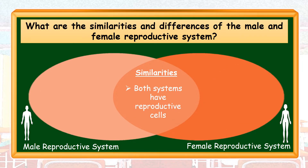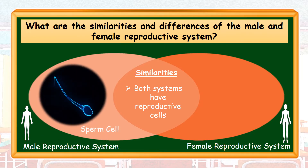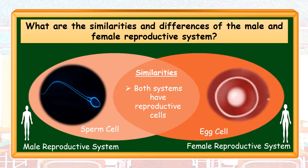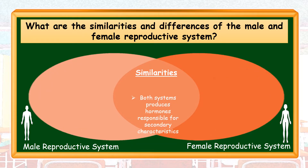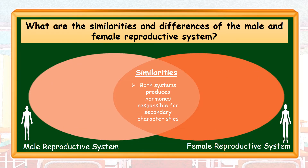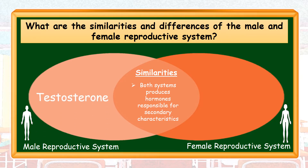Another similarity of both systems: both of them have reproductive cells. For males, they have sperm cells, while for females, they have egg cells. Both systems produce hormones, which are responsible for the development of secondary characteristics of each individual. For males, they produce testosterone, while for females, they produce estrogen and progesterone.